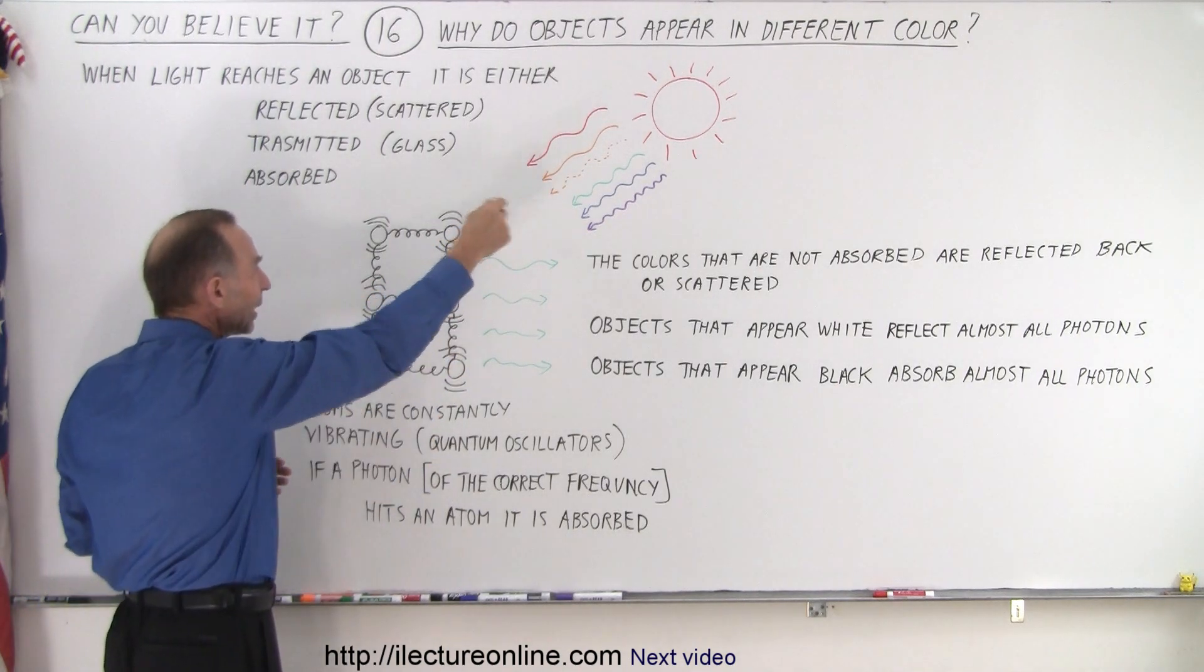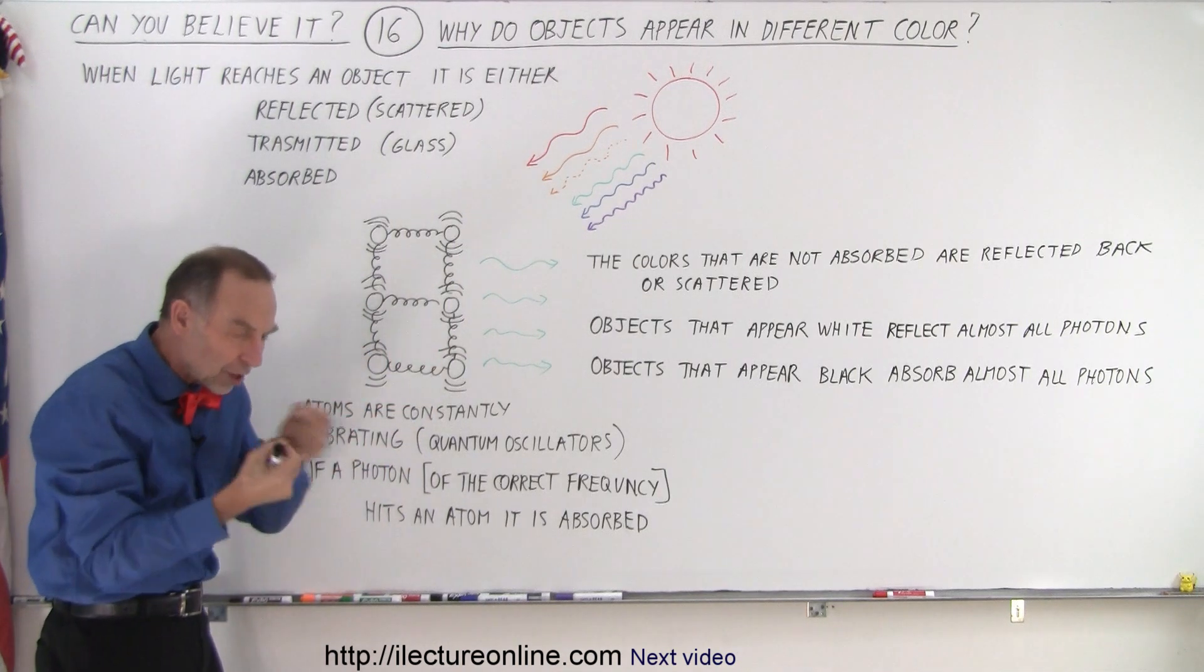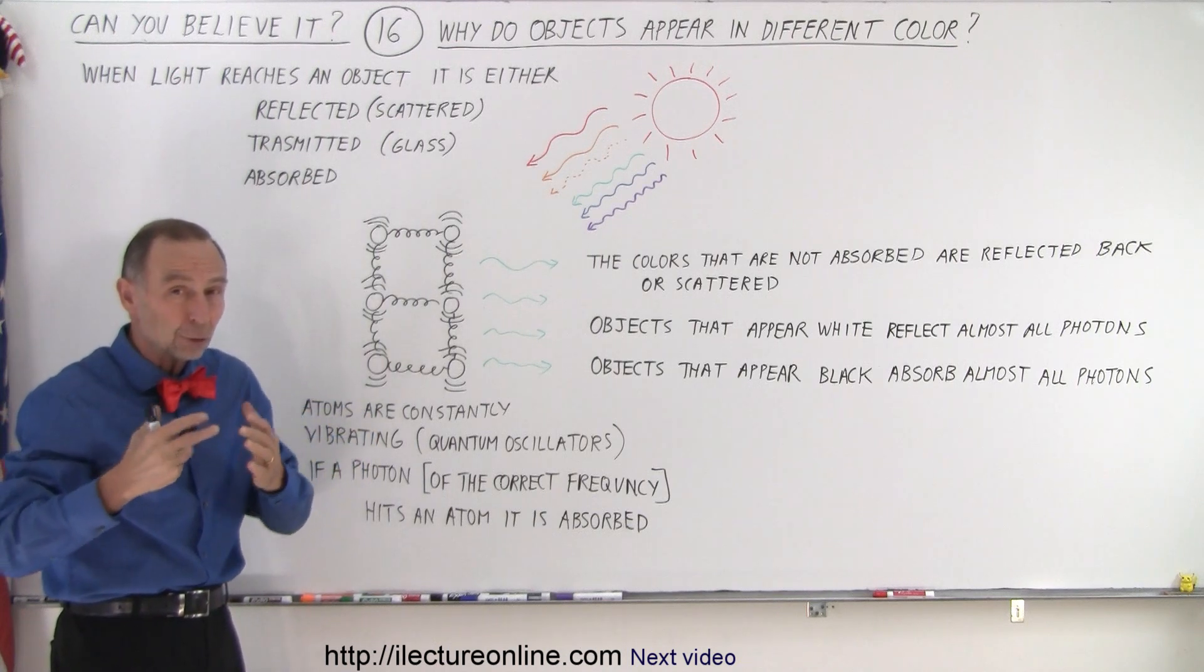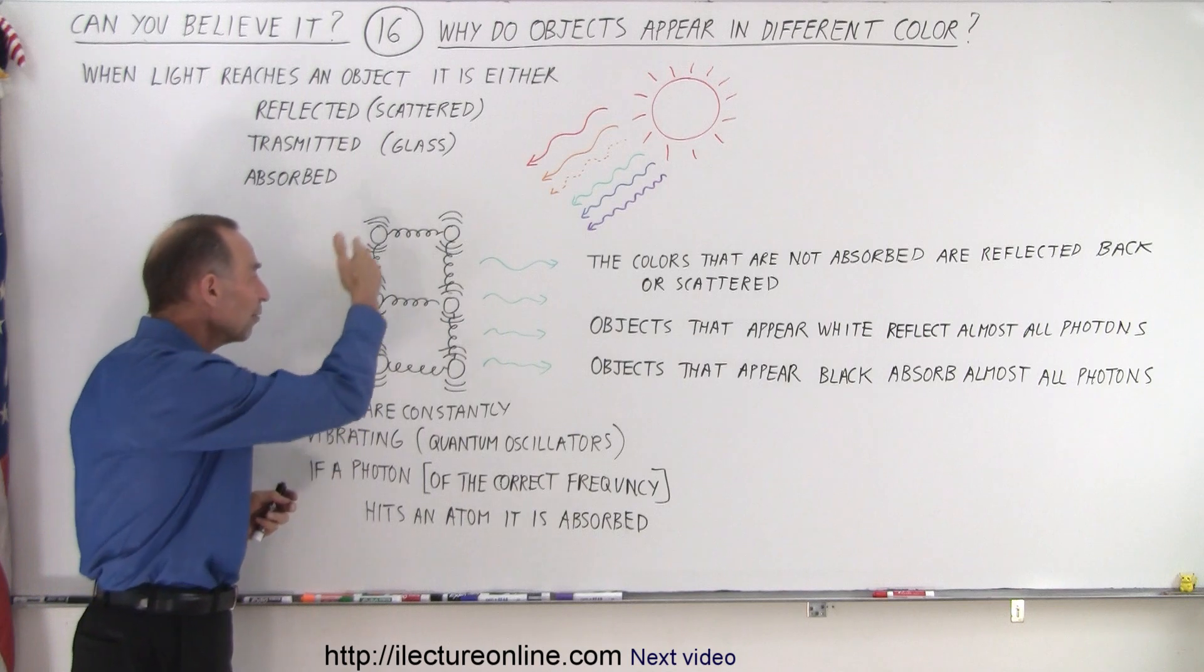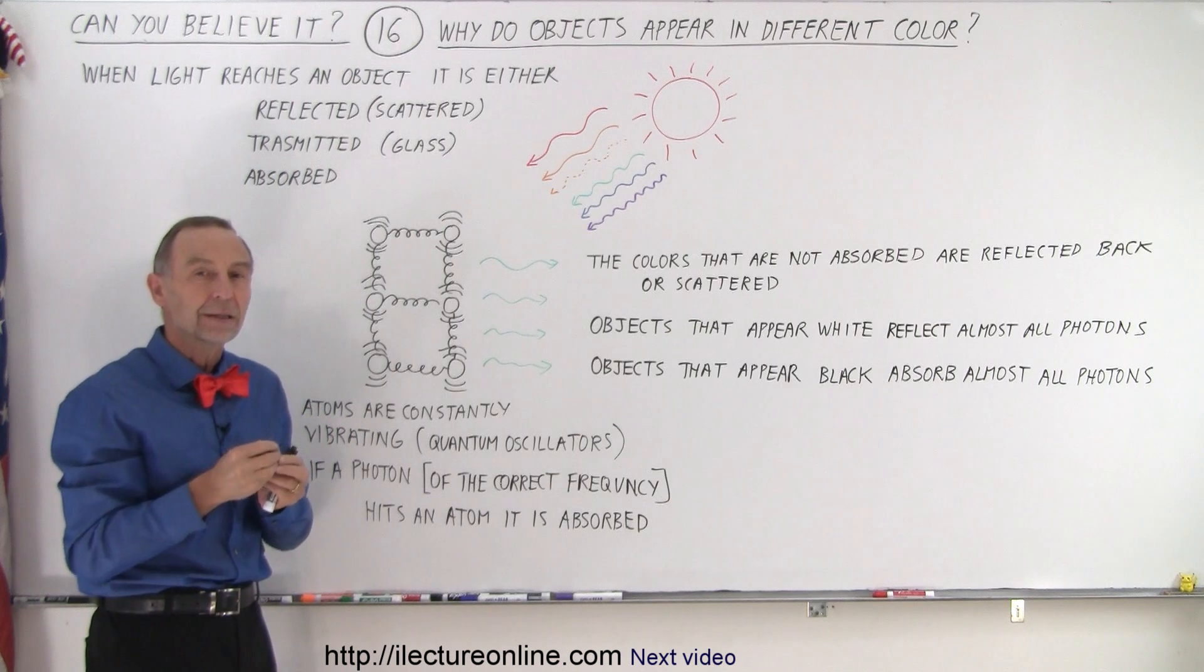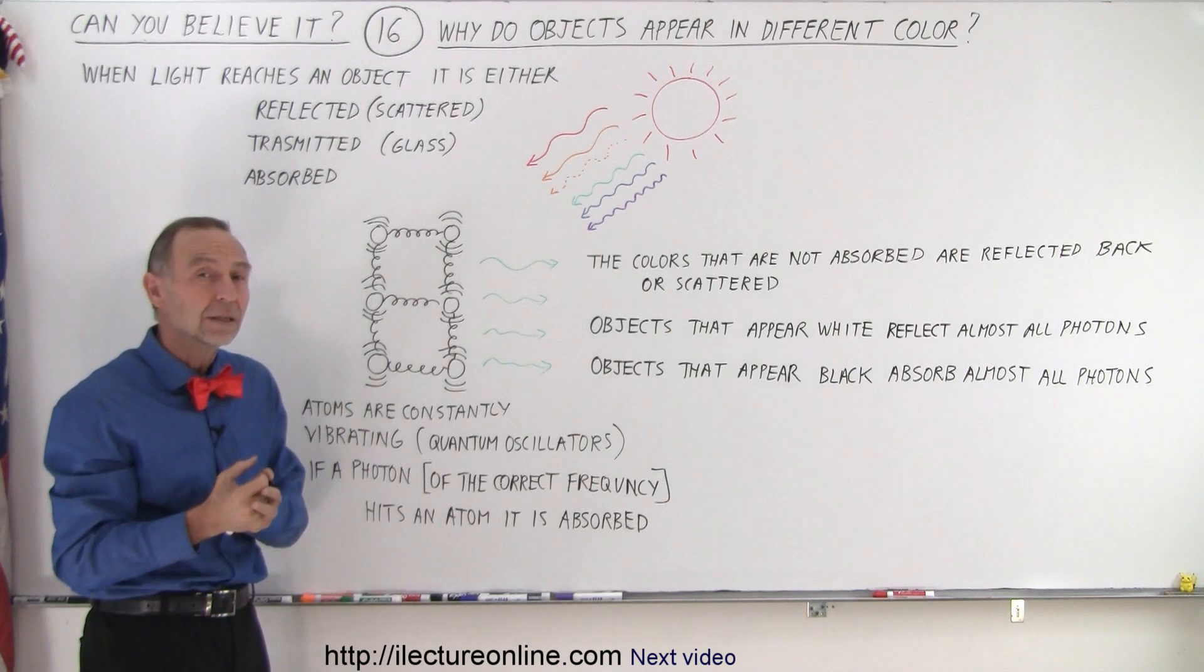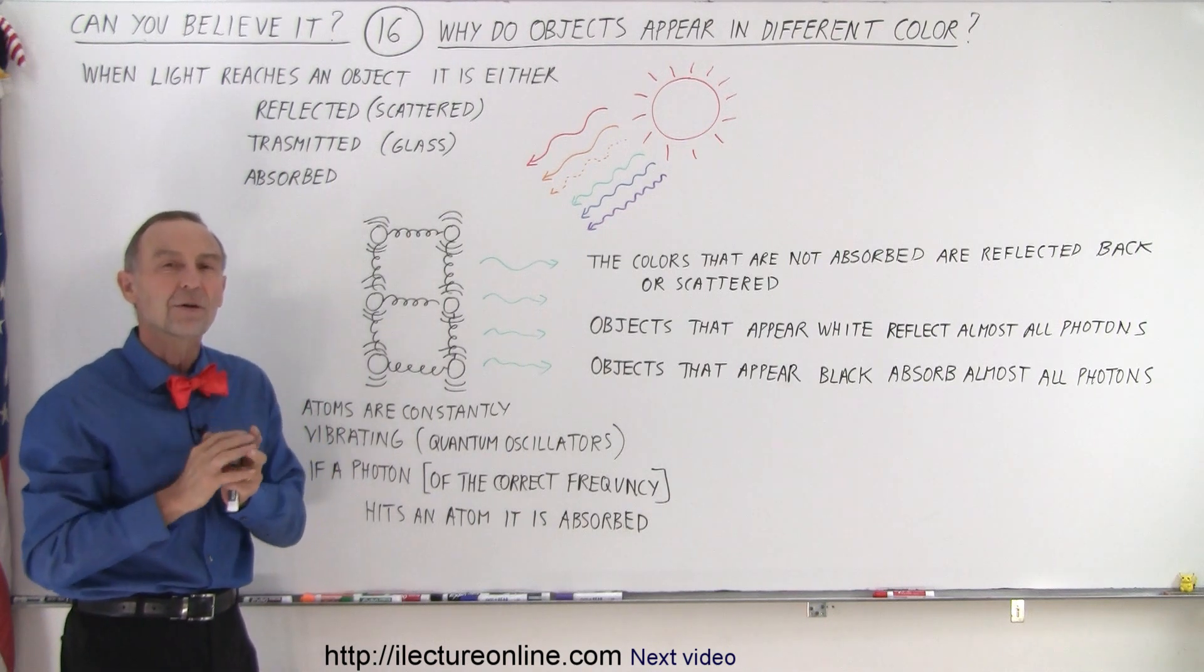Now, that light will hit an object, and an object is made out of atoms, and atoms are constantly vibrating. The warmer the object, the faster they're vibrating. The colder the object, the slower they're vibrating. And the vibration of the atoms depends upon each individual material. Different elements, different compounds, different things that are made - the atoms all vibrate at slightly different frequencies.